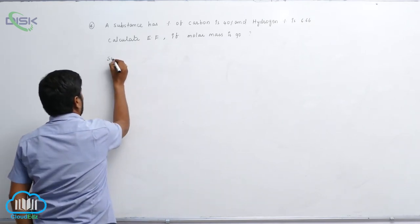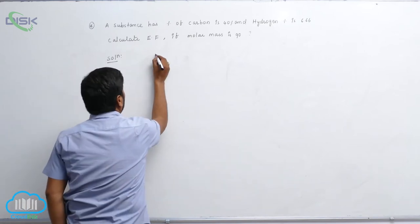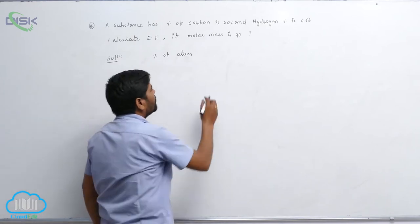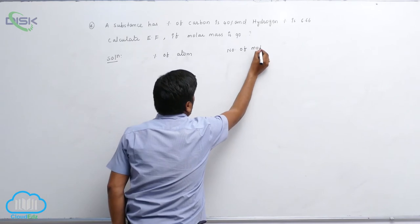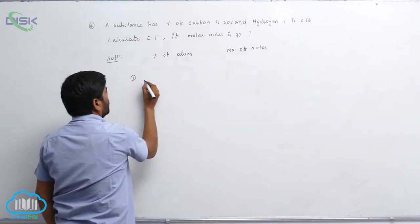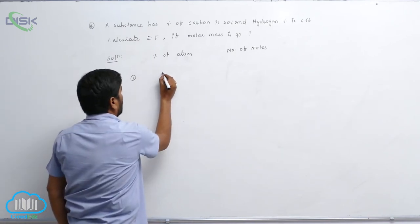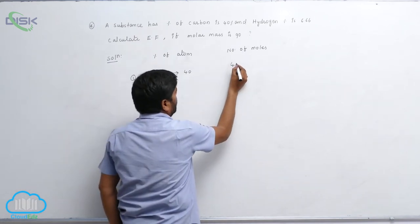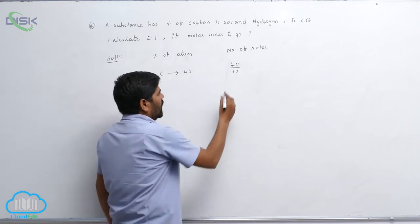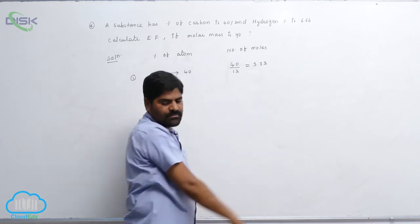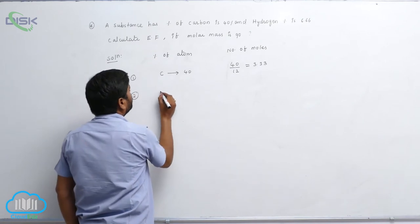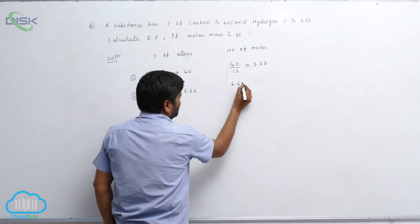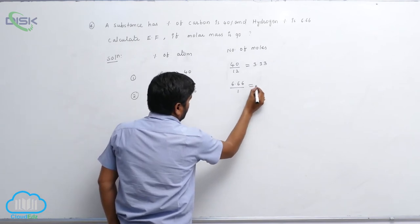In the solution, we find the number of moles for each element. Carbon percentage is 40, so 40 divided by 12 gives 3.33 moles. Hydrogen is 6.66%, so 6.66 divided by 1 gives 6.66 moles.